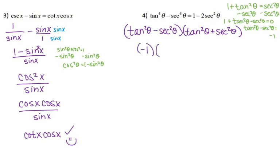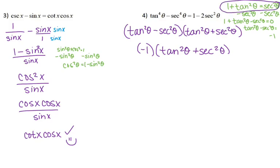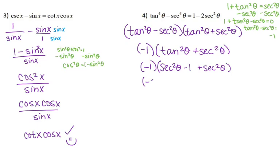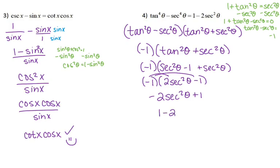For my second parenthesis, I have tangent squared plus secant squared. My goal is to have everything in terms of secant squared, so I need to change tangent squared. Going back to the identity and solving for tangent squared by subtracting 1 from both sides gives tangent squared equals secant squared theta minus 1. I can combine like terms in the second parenthesis: secant squared minus 1 plus secant squared is 2 secant squared minus 1. Distributing the negative 1 gives negative 2 secant squared theta plus 1, which rearranges to 1 minus 2 secant squared of theta — exactly what we were looking for.